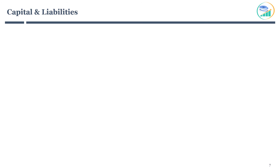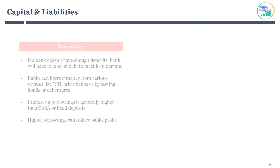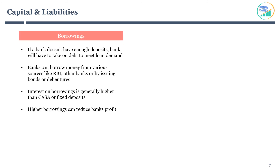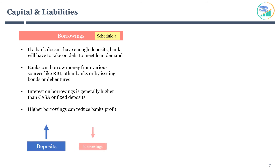Moving to the next line on the liabilities side: borrowings. If a bank doesn't have enough deposits, it will not be able to grow its loan book due to low liquidity. The other option is for the bank to take on debt to meet loan demand and liquidity. Banks can borrow money from various sources like the RBI, other banks, or by issuing bonds or debentures — see Schedule 4 for details. Interest on borrowings is generally much higher than CASA or fixed deposits, so higher borrowings can reduce a bank's profitability. It's very important for banks to grow deposits and keep high-cost borrowing as low as possible to ensure higher net interest margin and overall profitability.